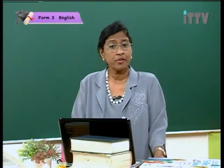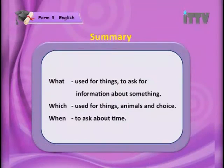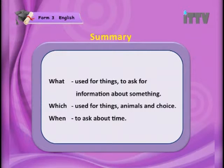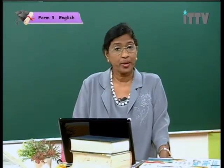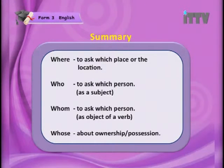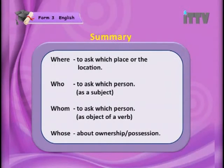Now here is a summary of the whole lesson. 'What' — used for things, to ask for information about something. 'Which' — used for things, animals, and choice. 'When' — to ask about time. 'Where' — to ask about which place or location. 'Who' — to ask which person as a subject. 'Whom' — to ask which person as an object of a verb. 'Whose' — about ownership or possession.